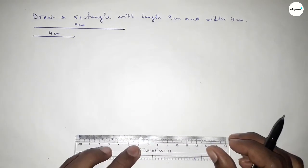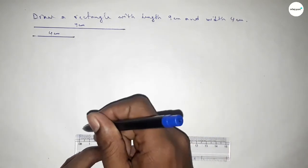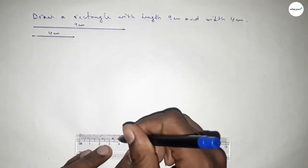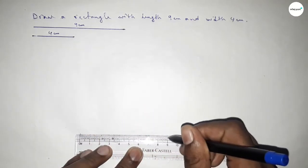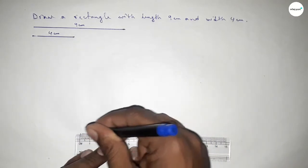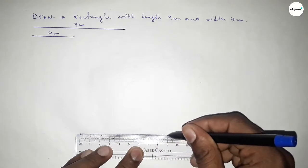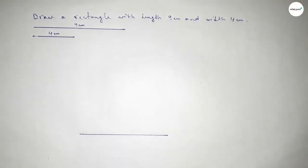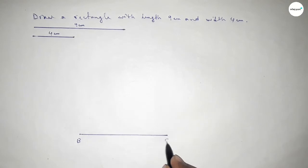Now we have to draw a line of length 9 centimeter — starting: 0, 1, 2, 3, 4, 5, 6, 7, 8, 9. So this is the 9 centimeter line. Next, taking here point B and here point C.